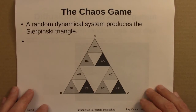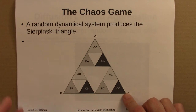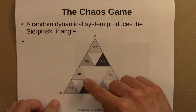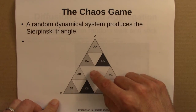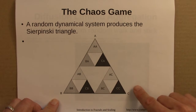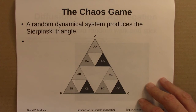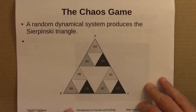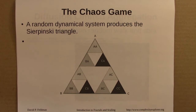I introduced the chaos game, which is another random system that produced the Sierpinski triangle. The rule here was: start with a point, go at random either halfway to A, halfway to B, or halfway to C. That process produces a fractal, and related processes can produce related fractals.